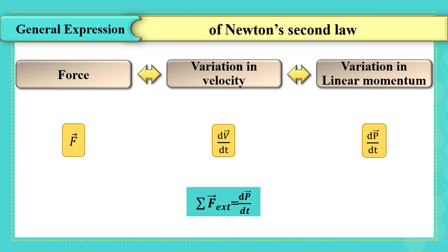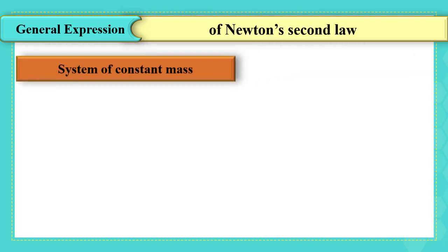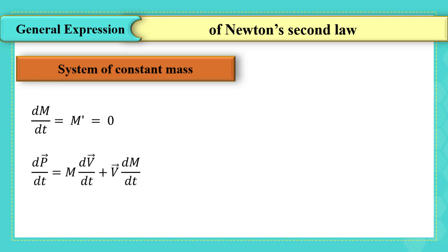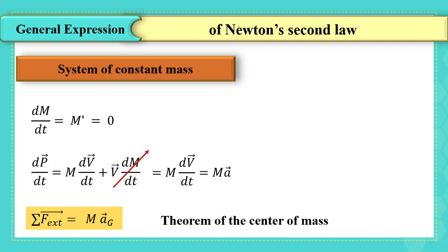Since p is a function of mass and velocity, if the system has constant mass, then dm by dt equals zero. Therefore dp vector by dt is simply m times dv vector by dt, which is m times the acceleration — like the case of a ball or marble. Then the sum of external forces equals the mass times the acceleration of the center of mass g.